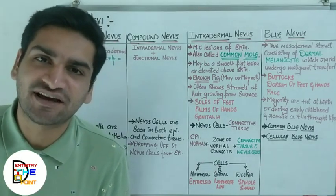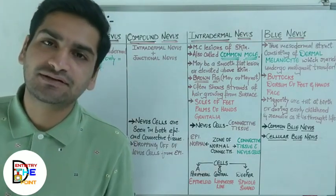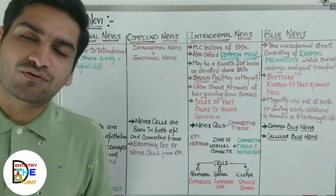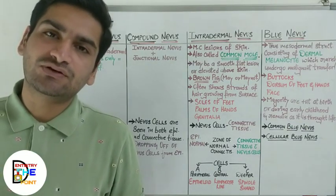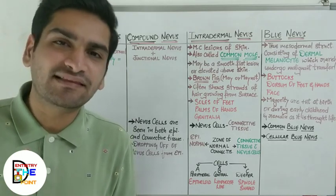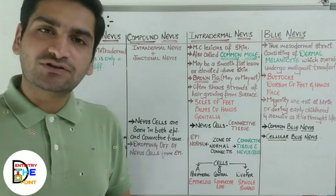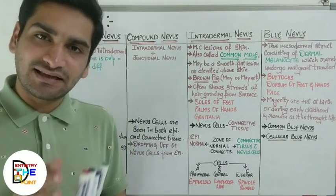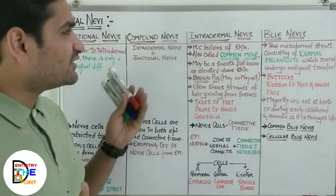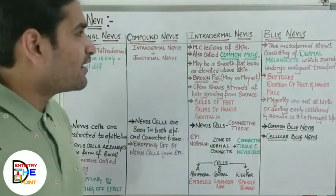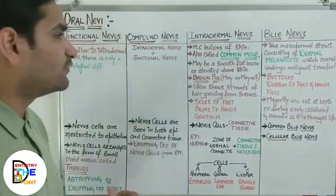Hi everyone, welcome back to our channel Dentistry to the Point. This is Dr. Dhrumbil Manik. In the previous video we discussed about oral nevi — the introduction, varieties, and the congenital and acquired variants. Next we move on to the discussion of histological variants. As discussed, there are three histological variants of nevi: the junctional nevus, compound nevus, and intradermal nevus. There is also one more variant called the blue nevus.